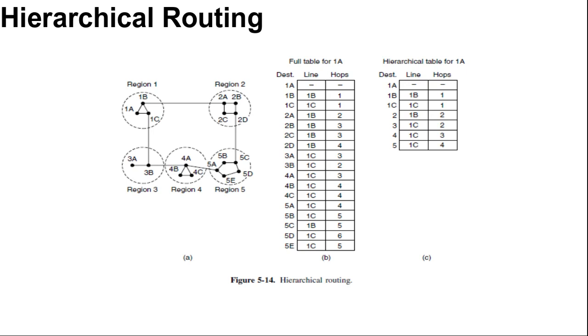For large networks, a two-level hierarchy may be insufficient. It may be necessary to group the regions into clusters, the clusters into zones, zones into groups, and so on, until we run out of names for aggregations. There are multiple levels in hierarchical routing.